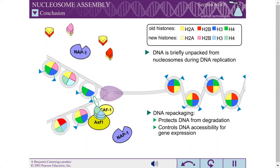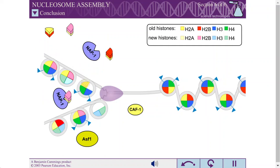In the cell, proper nucleosome assembly requires chaperone proteins such as CAF1, ASF1, and NAP1.